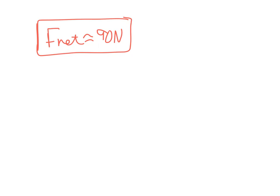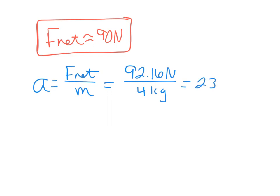And then for number 5, we're looking for acceleration. We know that acceleration is equal to the net force divided by the mass. So we're going to use our unrounded net force, 92.16 newtons, divided by 4 kilograms. Our acceleration is equal to 23.04 meters per second square. So one sig fig acceleration is about 20 meters per second square.